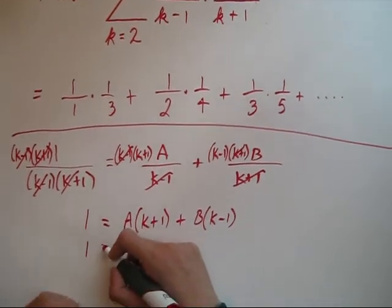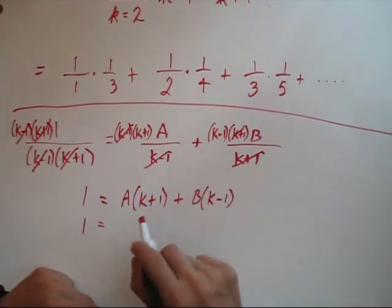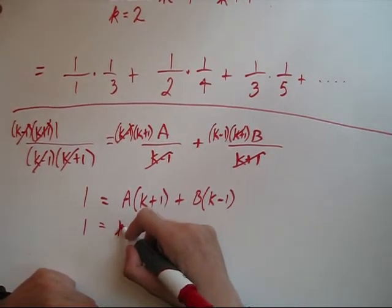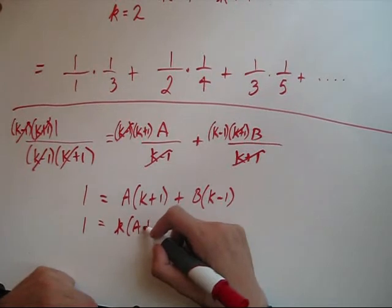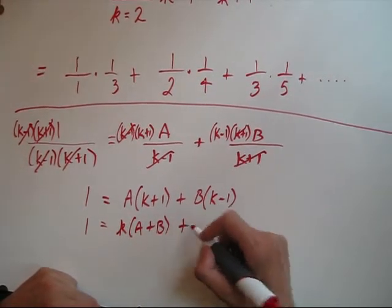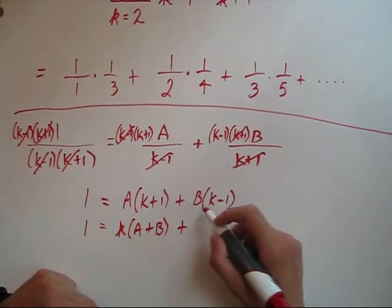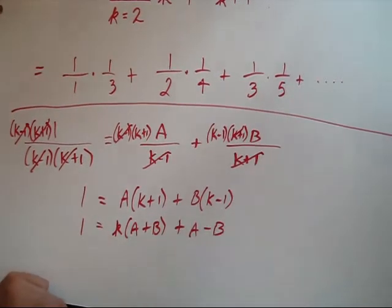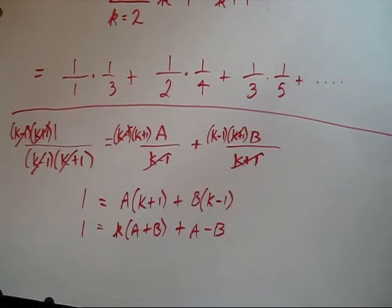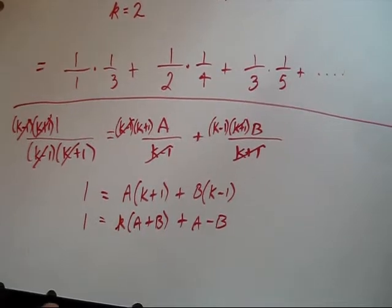And let's group like terms. So everything in front of a k we put together. We have k times a plus b, and then our constants will have an a and a minus b.